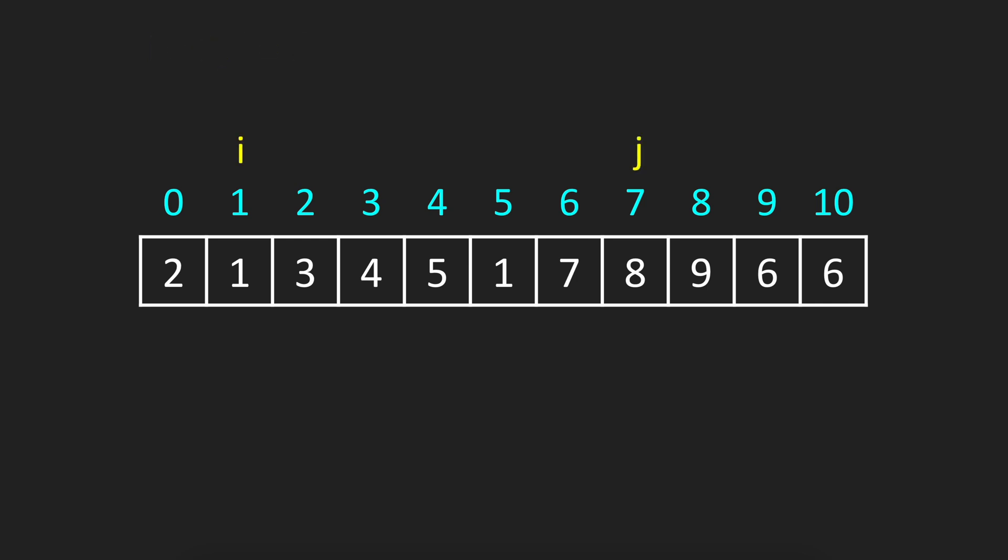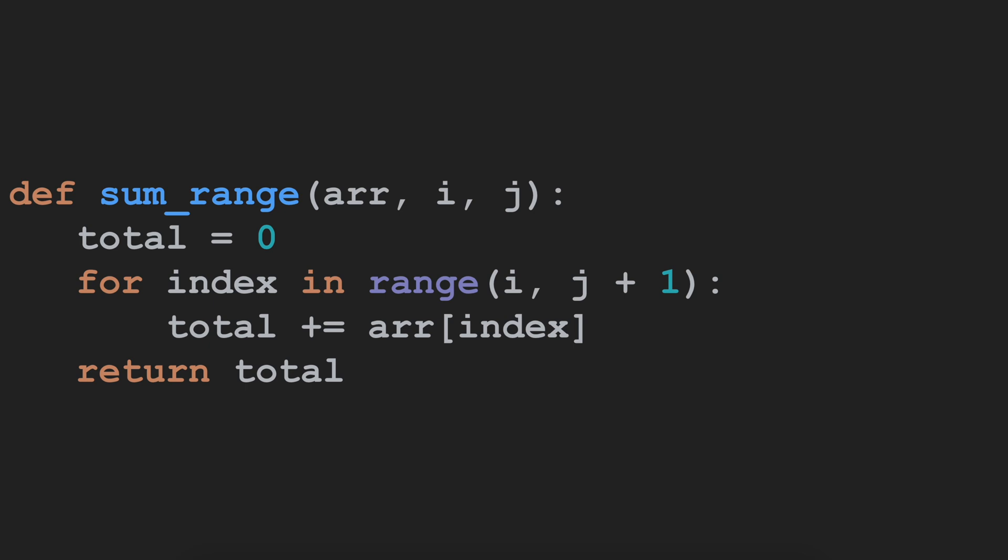So what would be the naive approach to solve this problem? The naive approach is we are going over our array each time once and we are calculating 1 plus 3 plus 4 plus 5 and so on.